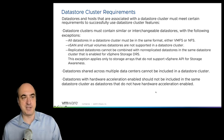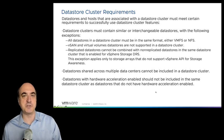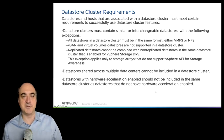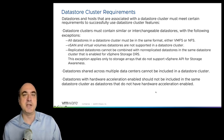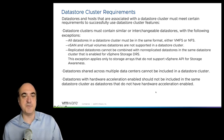Watch out for replicated data stores — don't combine them with non-replicated data stores in the same cluster. If storage DRS automates migration and moves a VM from a replicated data store to a non-replicated one, that would be a problem. If your storage supports VASA, it can advertise replication state to storage DRS so it avoids moving VMs across incorrect replication groups.